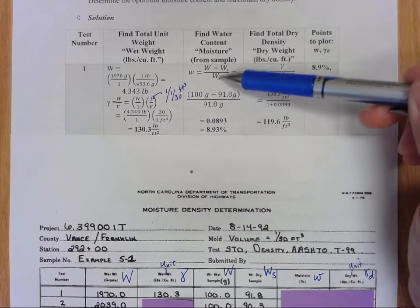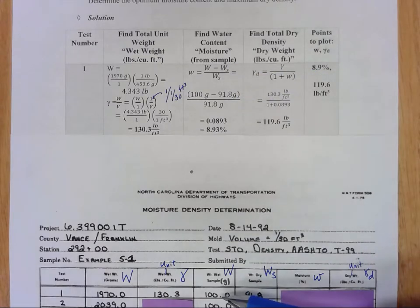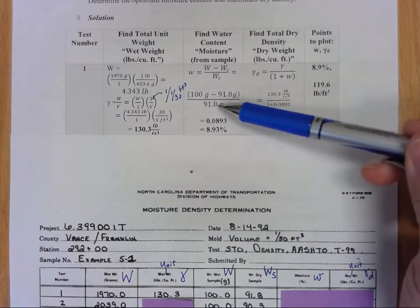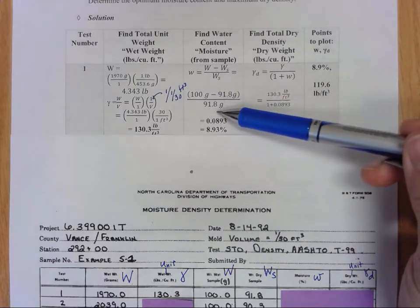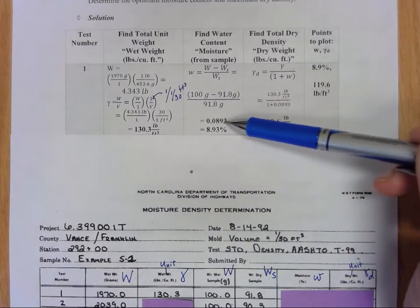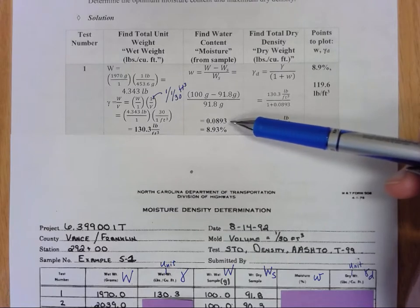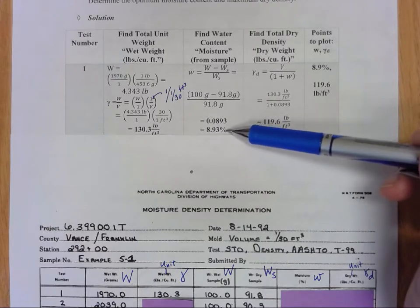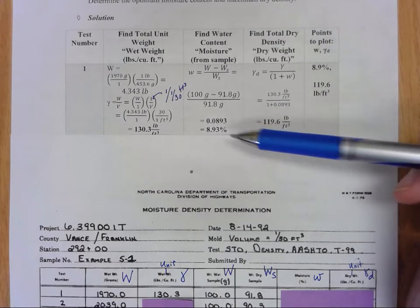So if you remember from your phase relationships, my water content is equal to my weight minus my weight of the solids divided by the weight of the solids. So in this case it's 100 minus 91.8 all divided by 91.8 and when I do that I get this decimal number 0.0893 and I can take that to two decimal places to get my moisture content of 8.93 percent.